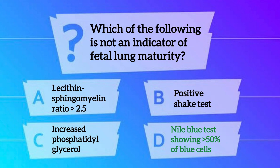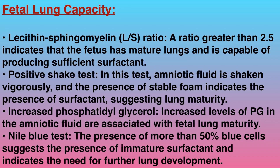Before ending this video, let's revise the key features of fetal lung maturity. 1. Lecithin-sphingomyelin ratio: a ratio greater than 2.5 indicates that the fetus has mature lungs and is capable of producing sufficient surfactant. 2. Positive shake test: amniotic fluid is shaken vigorously and the presence of stable foam indicates surfactant, suggesting lung maturity. 3. Increased phosphatidyl glycerol: increased levels of PG in the amniotic fluid are associated with fetal lung maturity. 4. Nile blue test: the presence of more than 50% of blue cells suggests immature surfactant and indicates the need for further lung development.